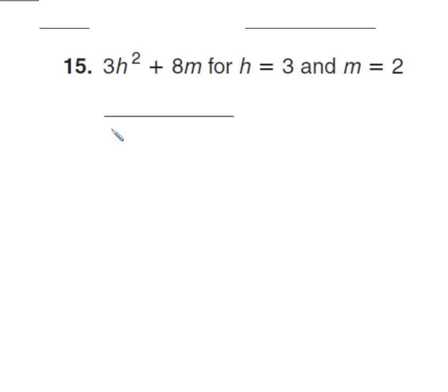So number 15 gets a little more complicated because we have two variables, h and m. So we've just got to plug them in. We have 3 times h squared, or to the second power. In this case, h is 3, so I'm going to put a little dot here: 3 times 3 to the second power, plus 8 times m. And the variable m is the value 2. So 8 times 2.